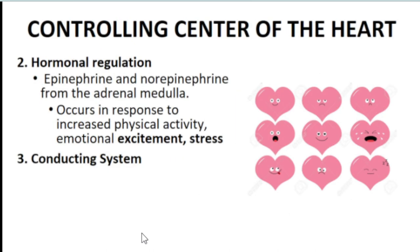The second controlling center of the heart is hormones, which usually come from the adrenal medulla — the organs sitting on top of the kidneys. The adrenal medulla releases hormones in response to physical activity, excitement, and stress — specifically epinephrine and norepinephrine — which have the same effects on the heart already described. The third controlling center is the conducting system, which will be discussed next.